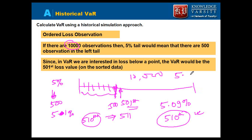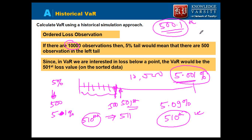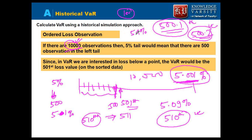If you require a 5.001% VaR, historical simulation fails because you would need the 500.1th data point, which cannot be estimated. The significance level achievable with historical simulation depends heavily on the number of observations available. With only 100 observations, you cannot even compute a 5.1% VaR.